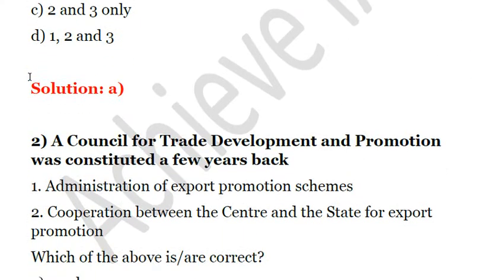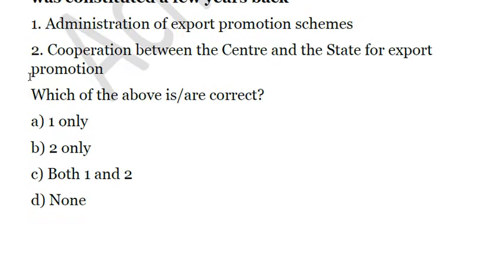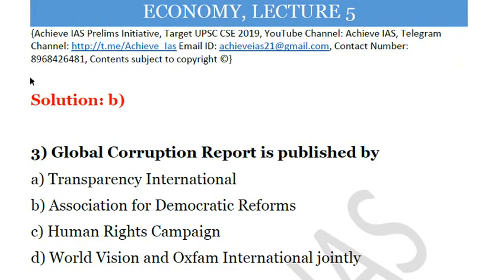Question 2 — The Council for Trade Development and Promotion was constituted a few years back. Which was the purpose: First, administration of export promotion schemes, or second, cooperation between Centre and states for export promotion? This council was constituted to ensure cooperation between the Centre and states for export promotion. It is not an executive body concerned with administration of export promotion schemes. Answer: B, second only.